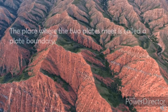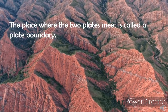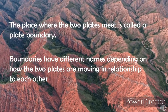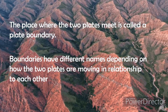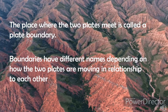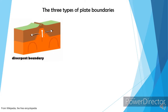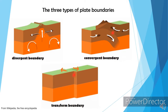The place where two plates meet is called a plate boundary. Boundaries have different names depending on how the two plates are moving in relation to each other. The three types of plate boundaries are: divergent boundary, convergent boundary, and transform boundary.